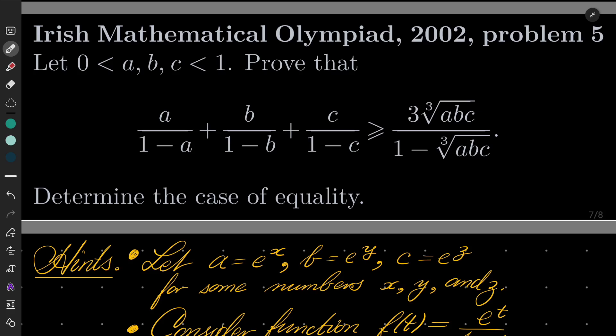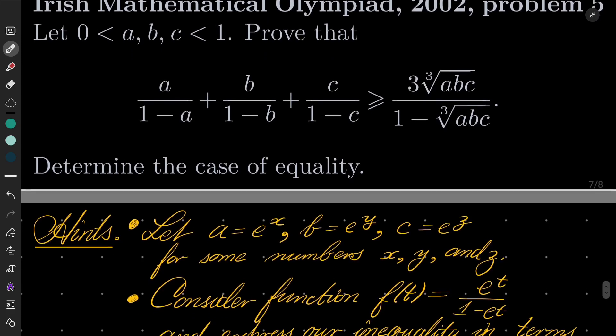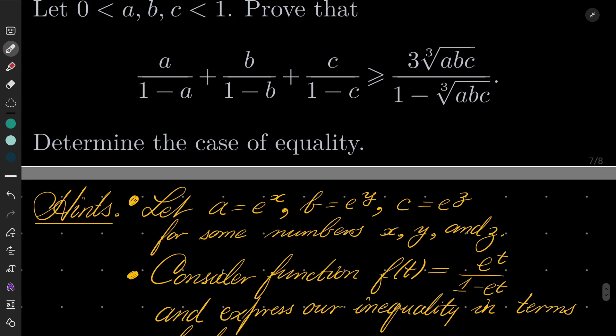So my hints for this problem, it's a classic problem I'd say. First of all, make the following substitution: a equals e to the power of x, b equals e to the power of y, c equals e to the power of z, where e is obviously Euler's number.